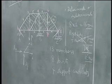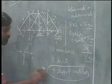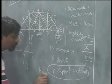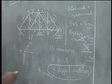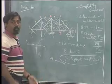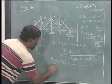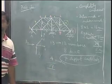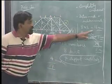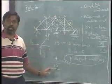How many unknowns are there? These four support constraints, if I remove I will have four reactions which are again unknown. Apart from that there are 13 members for which I need to find out the internal forces. Therefore 13 plus 4, there are 17 force unknowns that I need to find out.